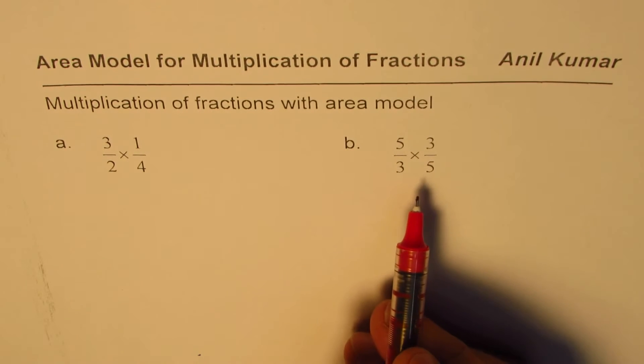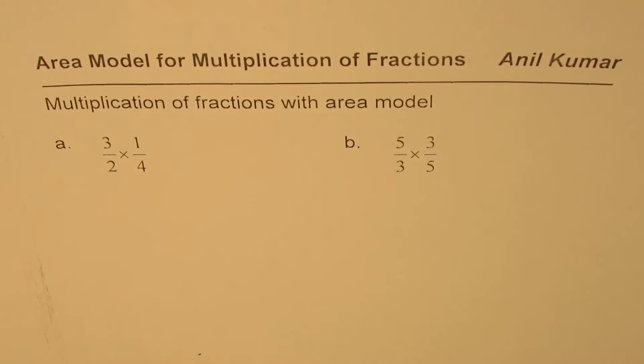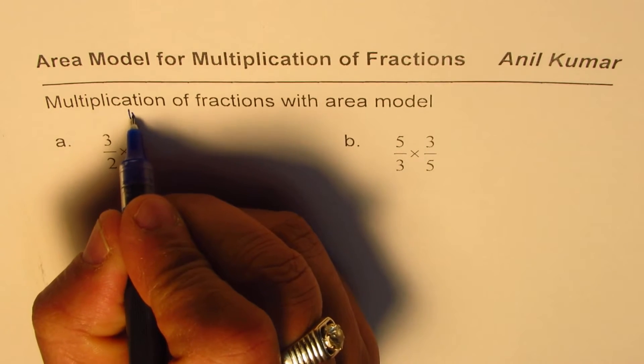And in both, what you find here is that we are multiplying improper fraction with a proper fraction. So in this case, we are taking multiplication of improper fraction.